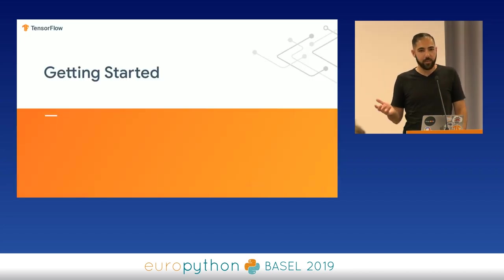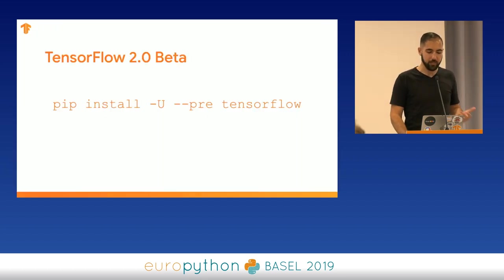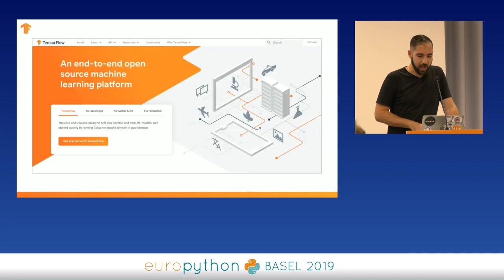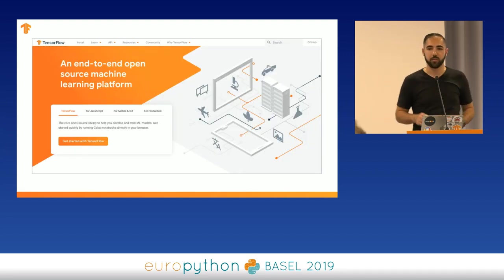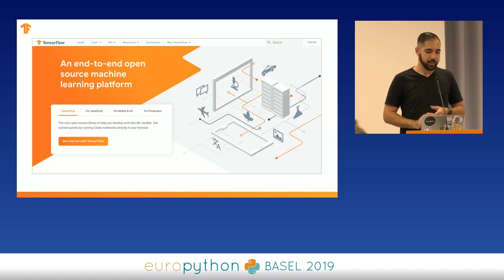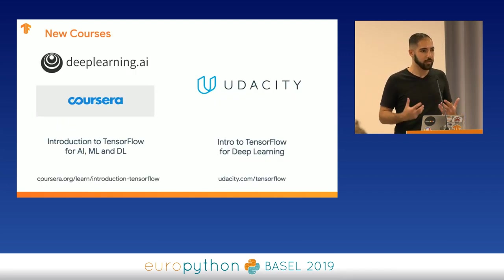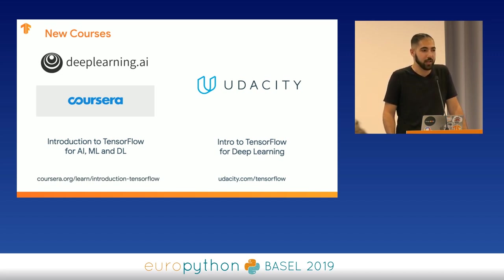If you want to get started generally with TensorFlow, go to tensorflow.org — there are tons of resources including Colabs, introductions, documentation, and API specs. You can install it now using pip install -U --pre tensorflow. We also have partnerships with Udacity and Coursera with TensorFlow courses specifically designed to help you get started, and we work with deeplearning.ai, run by Andrew Ng, one of the biggest names in the machine learning community today.